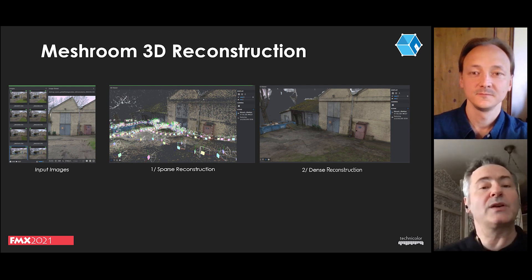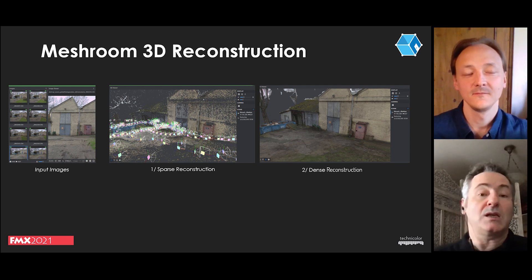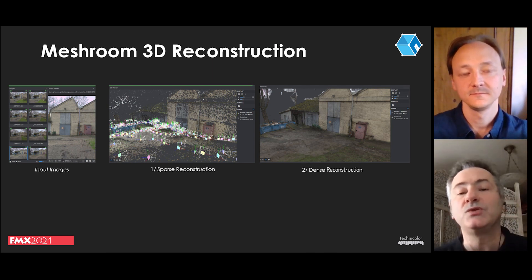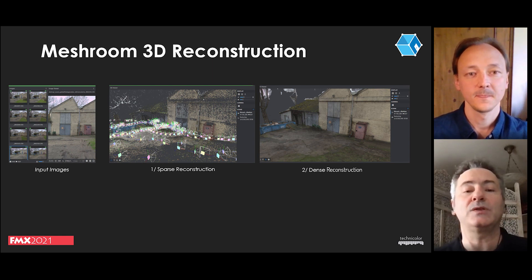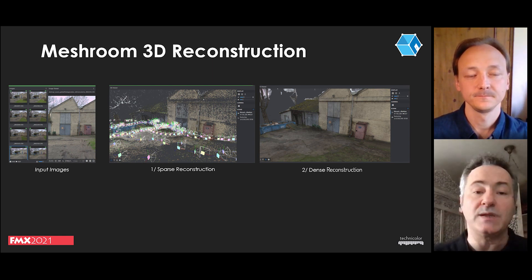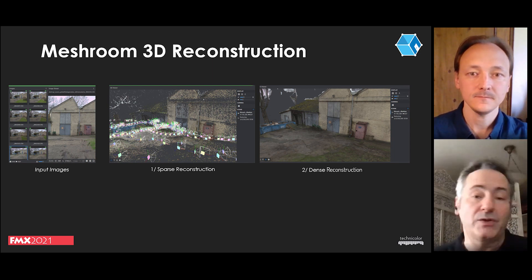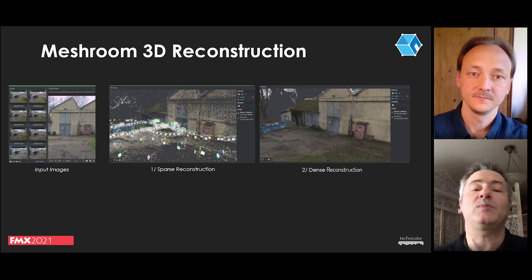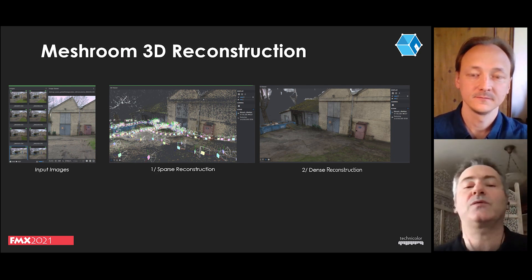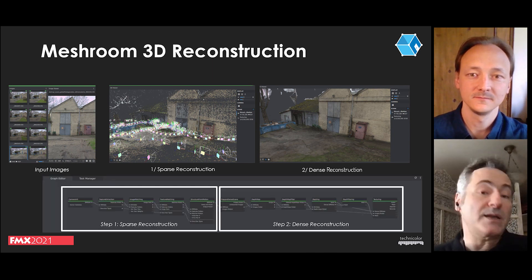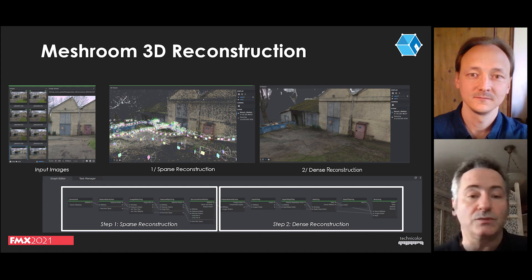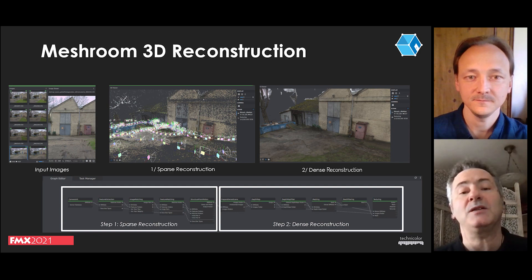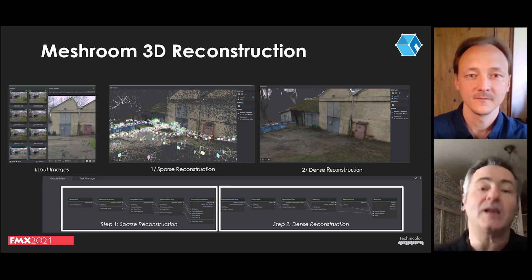Meshroom's historical pipeline is the 3D reconstruction, composed of two main steps. The first step is structure from motion, which computes the point cloud of the scene and camera positions with intrinsic parameters — this is called the sparse reconstruction. The second step is the multi-view stereo pipeline to compute the dense estimation of the surface. The last node of step one is the structure from motion node, and the last node of step two is the texturing node. Now Fabien is going to show you this pipeline with the latest release.